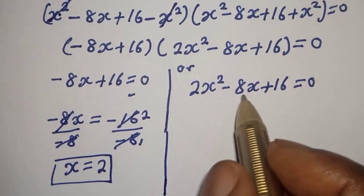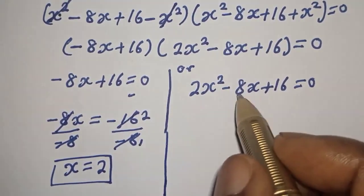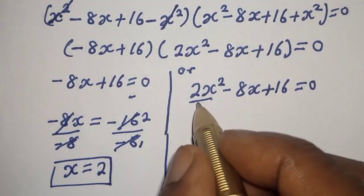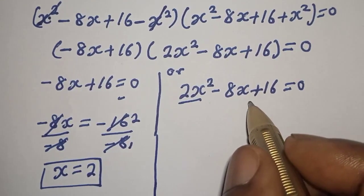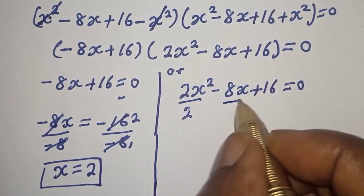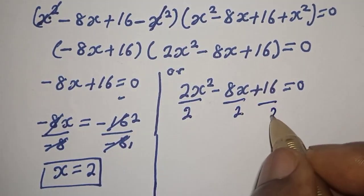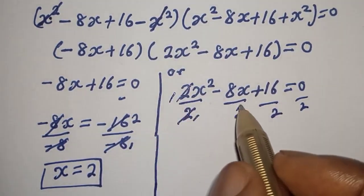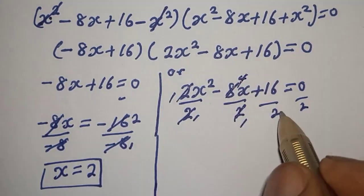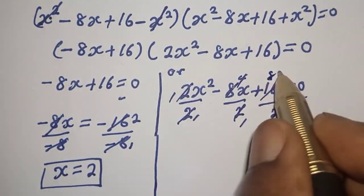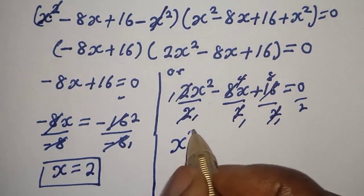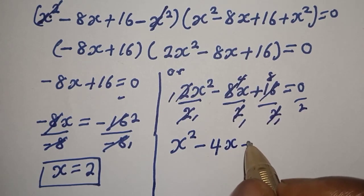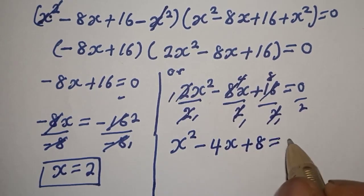From the second case, we can simplify by dividing all terms by 2. Dividing 2s squared minus 8s plus 16 equals zero through by 2 gives us s squared minus 4s plus 8 is equal to zero. This is a quadratic equation in its reduced form.